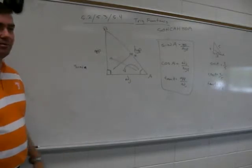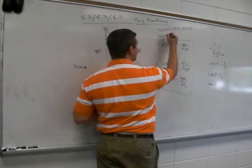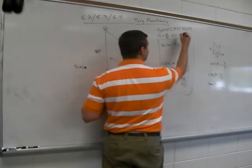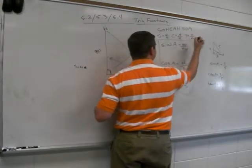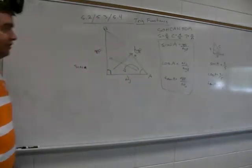How is that going to help you memorize it? Sine is opposite over hypotenuse. Cosine is adjacent over hypotenuse. And tangent is opposite over adjacent. Write that down. Have that in your notes.